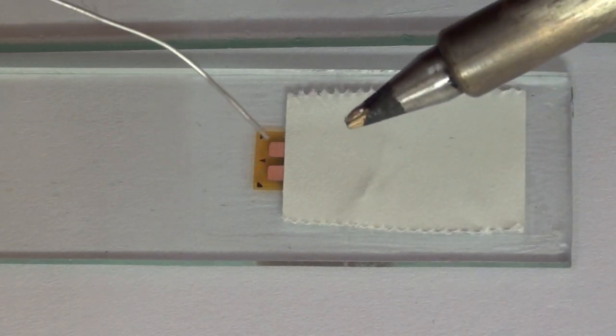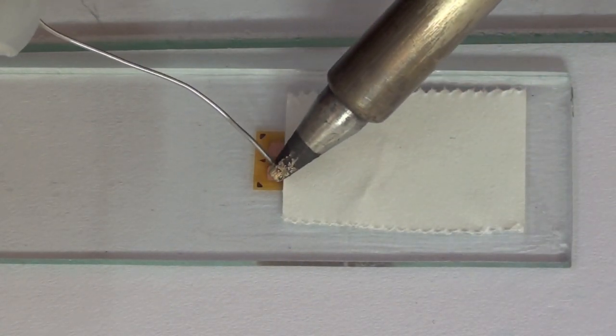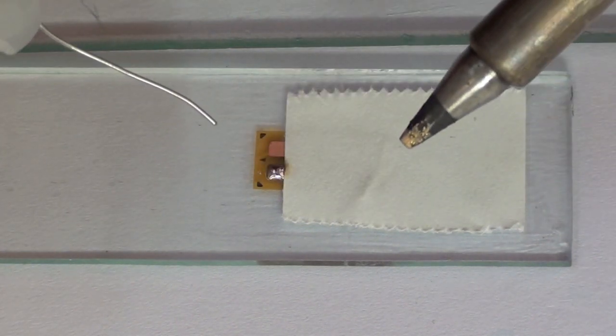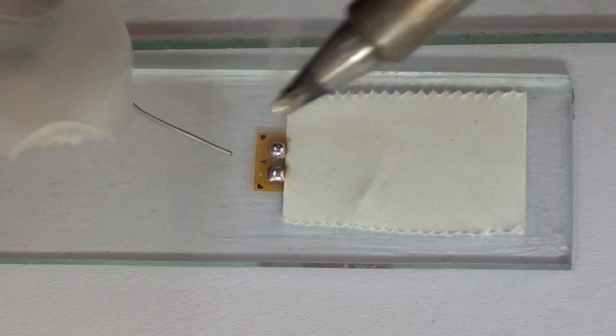The tabs of the strain gauge are also tinned with solder. The end of the solder wire is placed over the gauge tab, then touched with the tip of the soldering pencil and a small amount of solder is fed into the tab before lifting the pencil away.